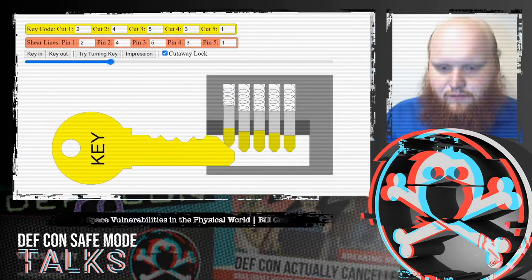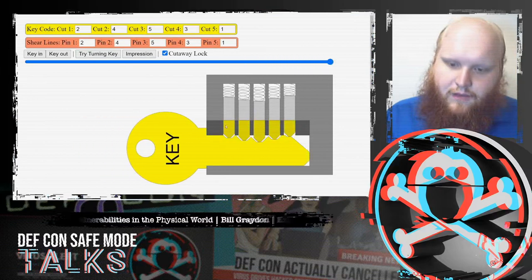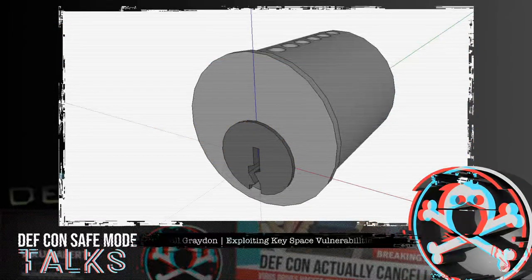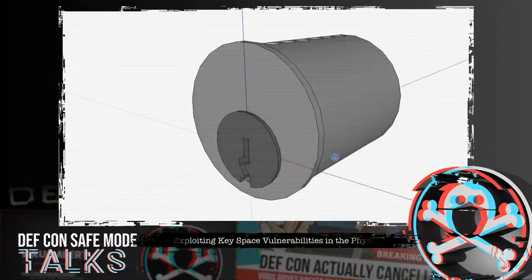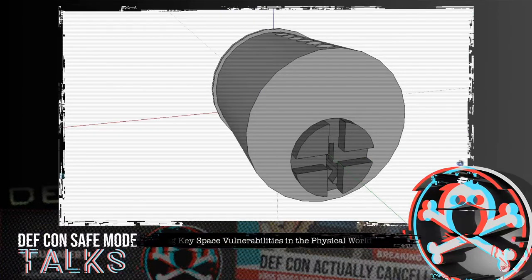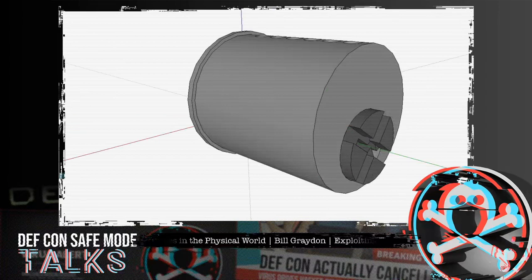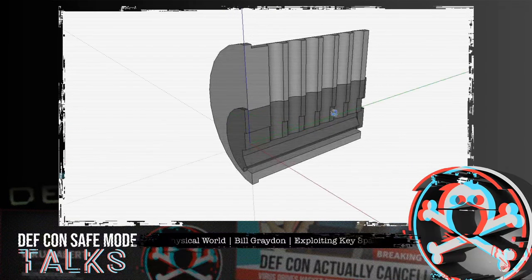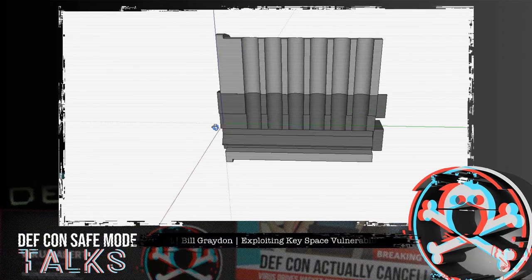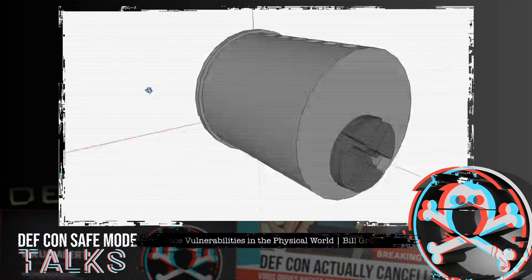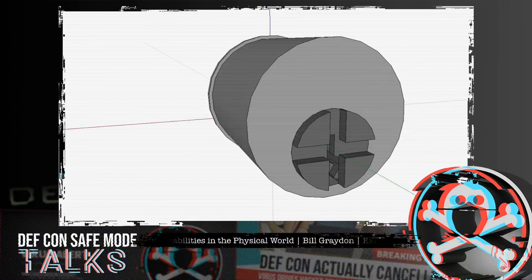A key enters the lock and interfaces with a number of pins. We have key pins close to the key and driver pins higher up. If they all line up with the top of the plug, it allows the plug to turn. Here is a familiar lock and its inner insert called the plug. When all those pins line up, it allows it to turn. Looking at the cross section, when those pins line up as shown in the two-dimensional diagram, that's what allows that to happen. If any of those pins are not at the right height — with a driver pin into the plug or a key pin up into the housing — that will not allow it to turn and the lock remains locked.